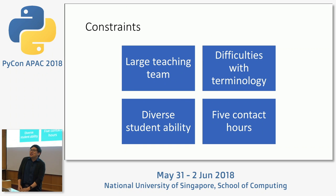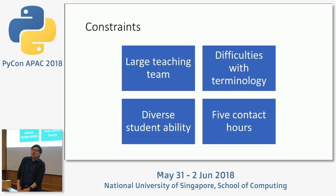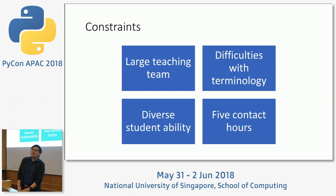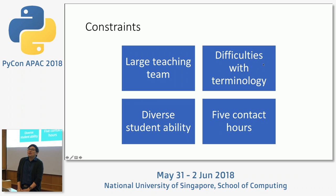In introducing machine learning to our course, we had several constraints to consider. One is the large teaching team, because this course is offered to the whole school — we have about 10 classes, meaning a lot of faculty are involved. We also have diverse student ability, because students come from various backgrounds — not only A-level, but also Polytechnic and international students. Every week we see them for five contact hours, which we also had to consider when planning our change.